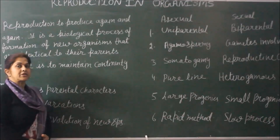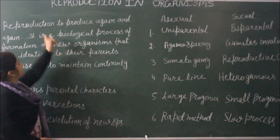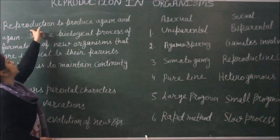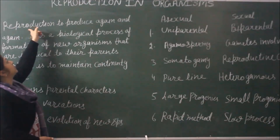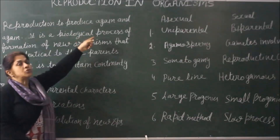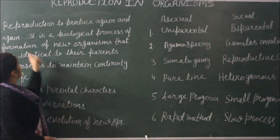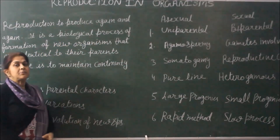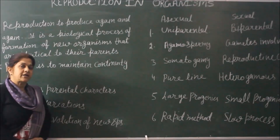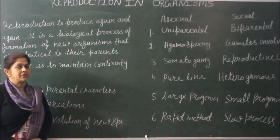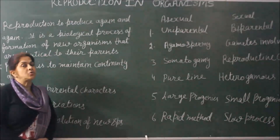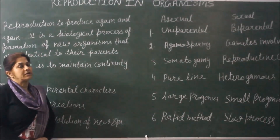What is meant by reproduction? Reproduction means, as the word indicates, to reproduce again. 'Re' means again, and 'production' means to produce — that is, to produce again and again. So reproduction is a biological process of producing young ones that are identical to their parents, meaning they are genetically similar to their parents.